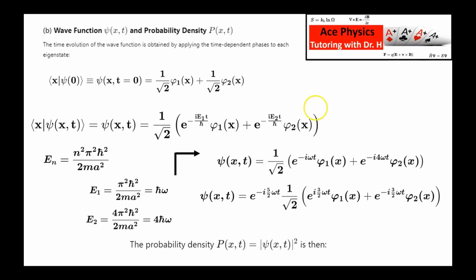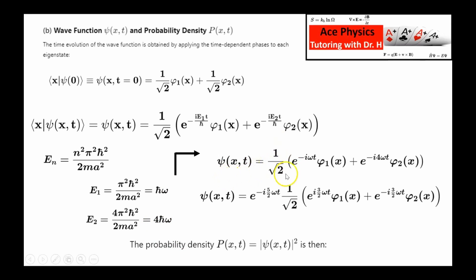For the infinite square well potential, E_n equals n squared pi squared h-bar squared over 2mA squared. For E1, replacing n with 1 gives E1 equals pi squared h-bar squared over 2mA squared. It's a fundamental rule that energy equals h-bar omega, so E1 equals h-bar omega. For E2, replacing n with 2 gives 4 times that expression, so E2 equals 4 h-bar omega. Therefore, E1 over h-bar equals omega and E2 over h-bar equals 4 omega. The wave function evolves as 1 over root 2 times e to the minus i omega t times phi1, plus e to the minus i 4 omega t times phi2.